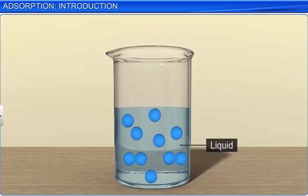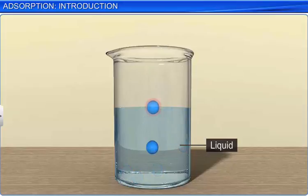Let us consider two molecules, one present in the bulk and the other on the surface of the liquid phase. The situation for the molecule on the surface of the liquid is different from the one in the bulk of the liquid. The molecule in the bulk experiences a balanced force of attraction from all directions.